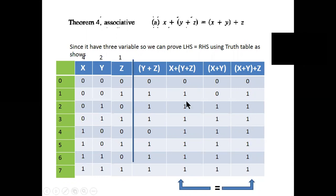The results are: 0,1,1,1,1,1,1,1 on one side and 0,1,1,1 on the other — both are equal. So here it means we prove the associative theorem using the truth table.